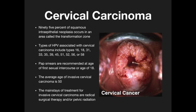Types of HPV associated with cervical cancer include types 16, 18, 31, 33, 35, 39, 45, 51, 52, 56, and 58. You don't necessarily need to memorize these — just be able to recognize them in multiple choice answers.